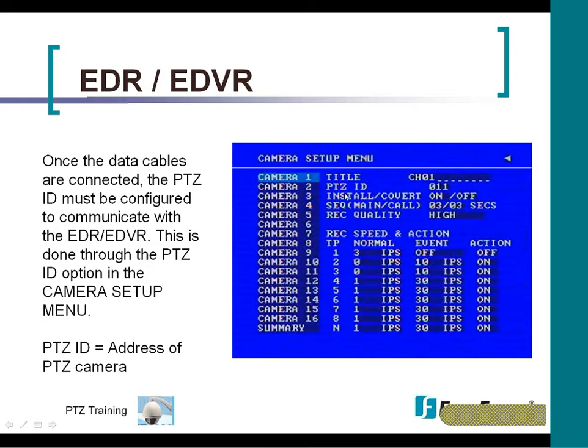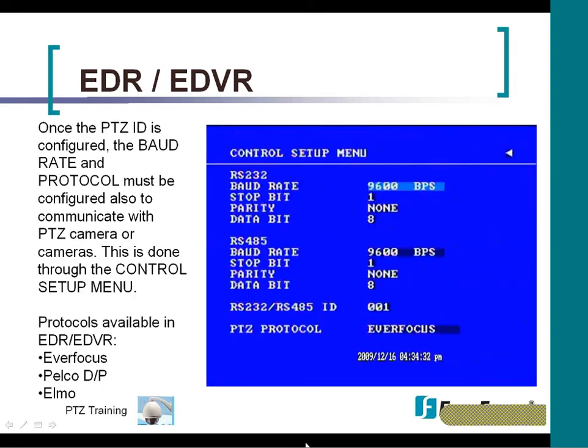You'll see underneath the title it says PTZ ID, and that's where you would put the address of the PTZ camera. Once that's done, you just have to go ahead and set up the baud rate and the protocol in the DVR so they're all responding on the same — and this is done through the control setup menu.